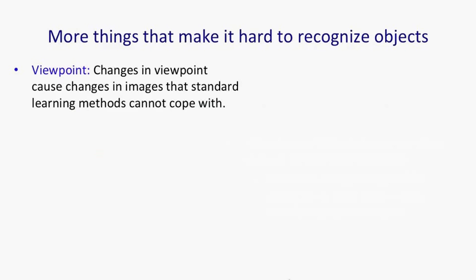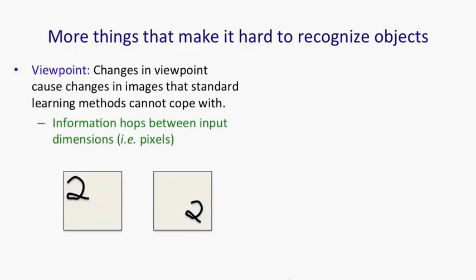One other thing that makes it hard to recognize objects is that we have different viewpoints. So there's a wide variety of viewpoints from which we can recognize a 3D object. Now, changes in viewpoint cause changes in the images that standard machine learning methods cannot cope with.